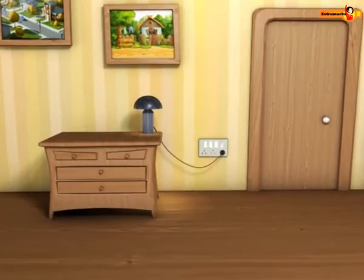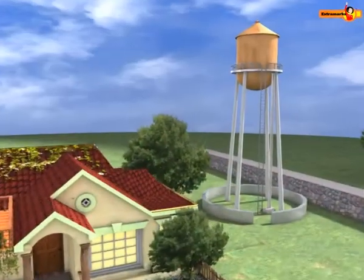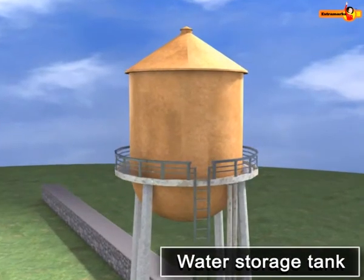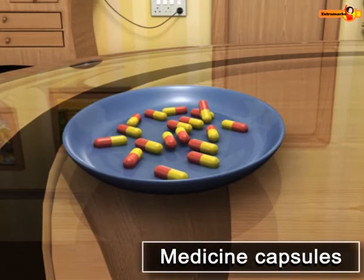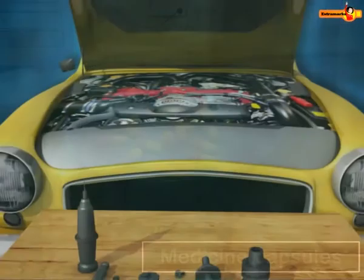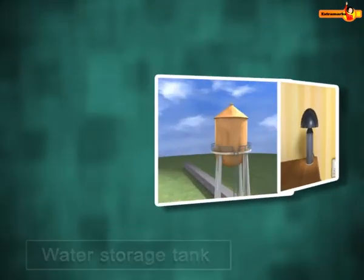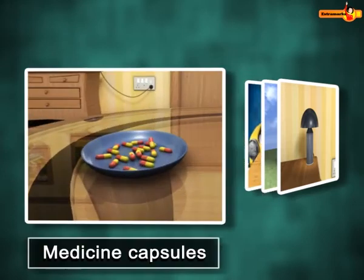Observe some objects here: lamp, water storage tank, medicine capsules, tools. What do you observe in these objects? These objects are formed with the combinations of solids. Let us see how to find the volume of some of these objects.